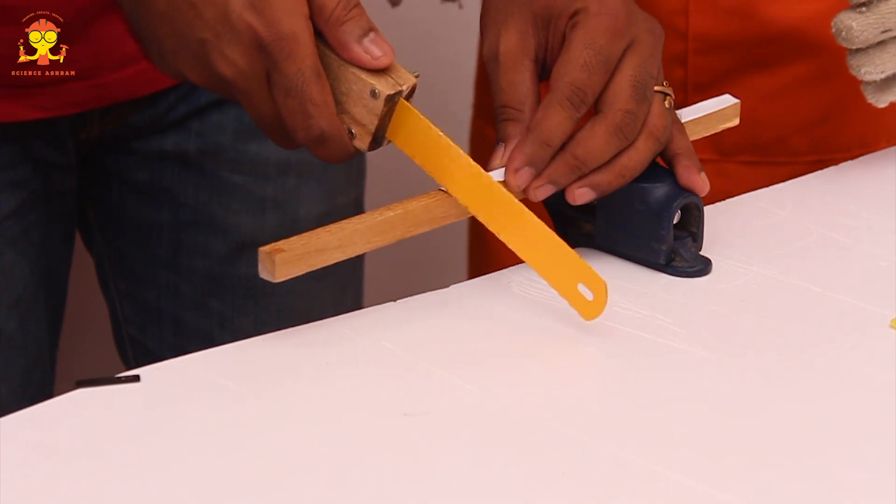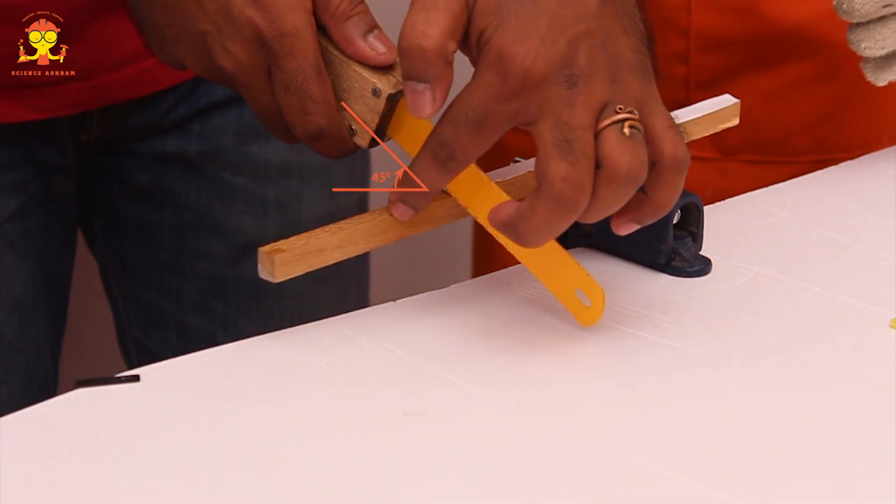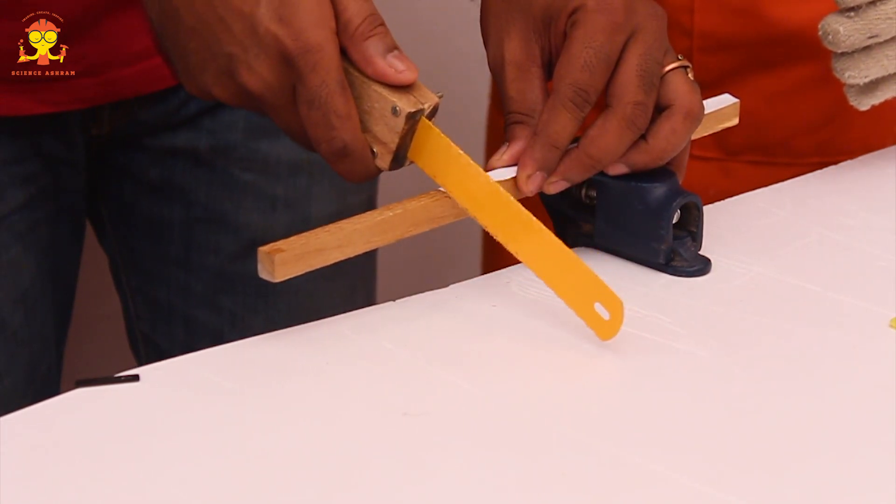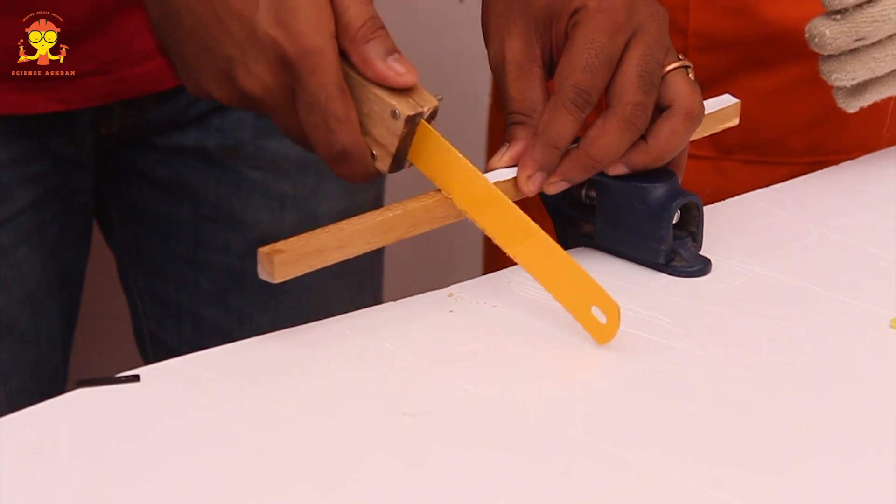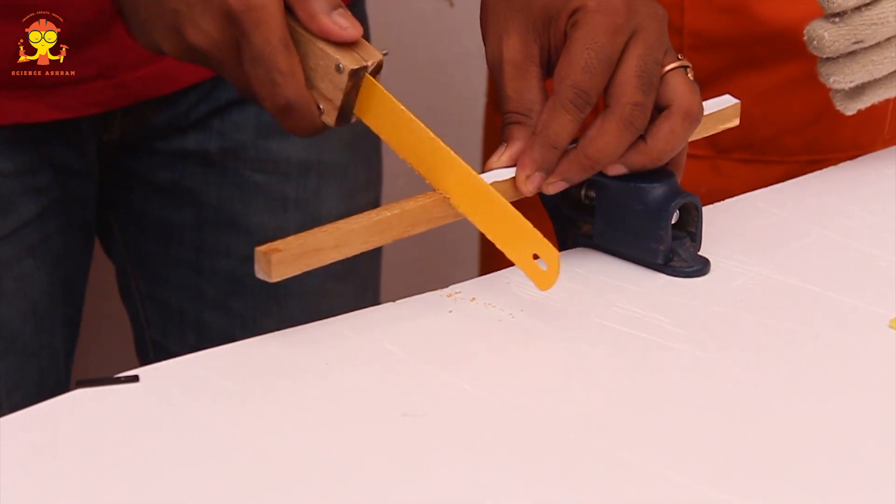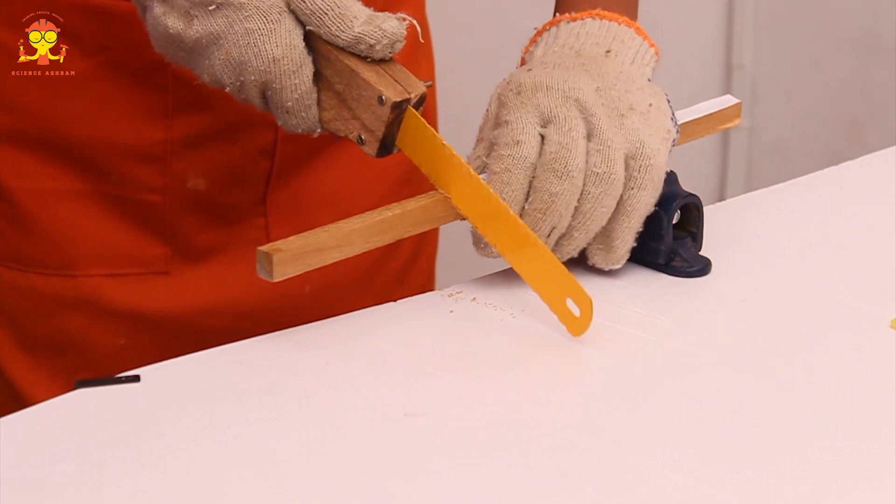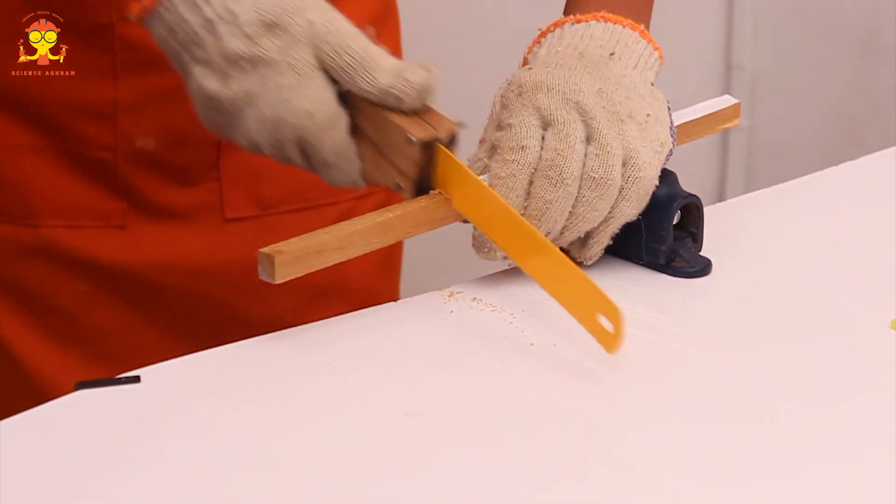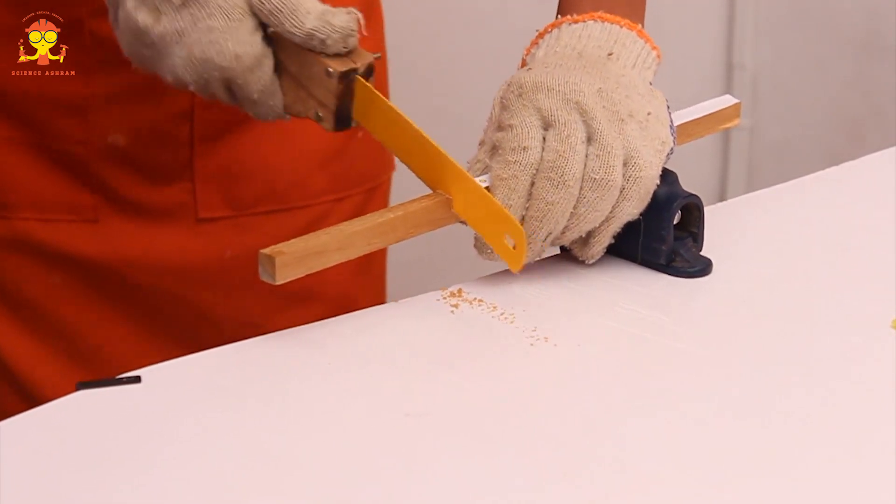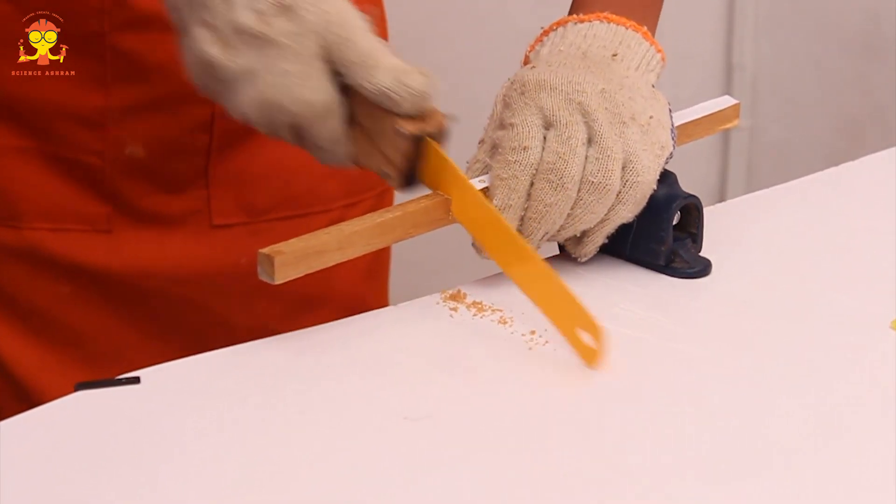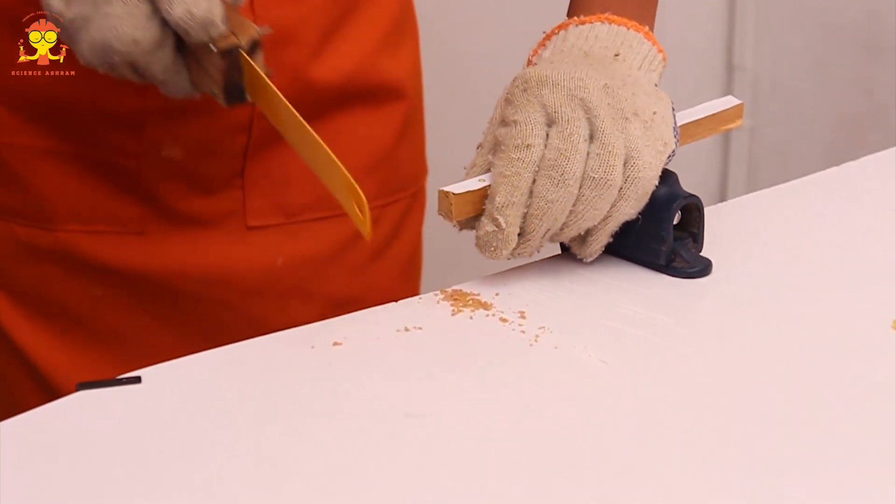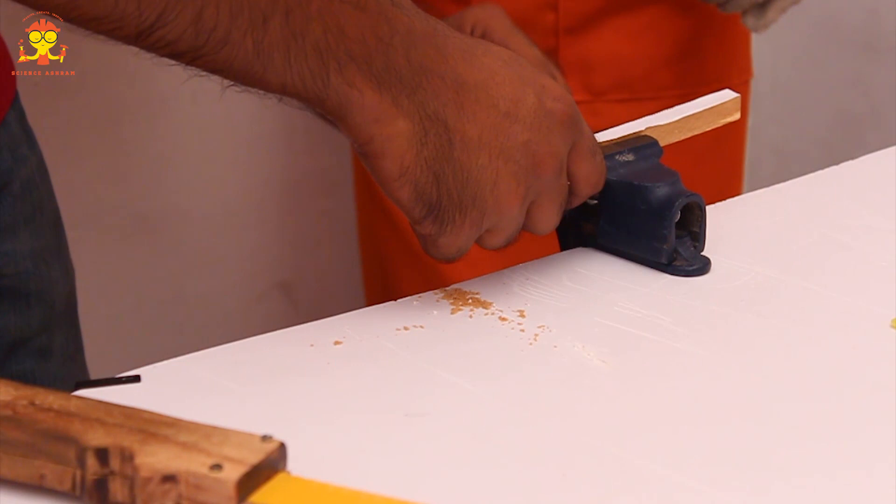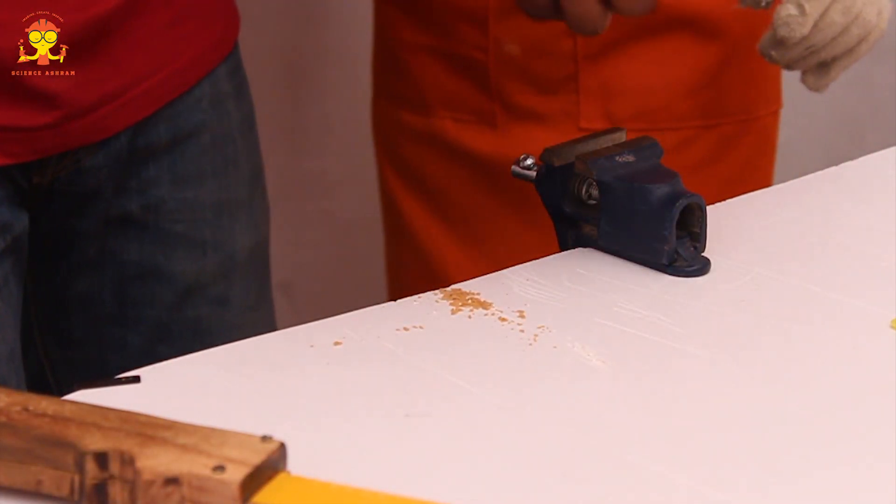Right? You need to make sure that the pull saw makes a 45 degree angle with the beading wood. Good! Okay! Now, you try! Yes! Very good! Very good Sairam! Wonderful! Now, remove this clamp and then do the same thing to the other beading stick.